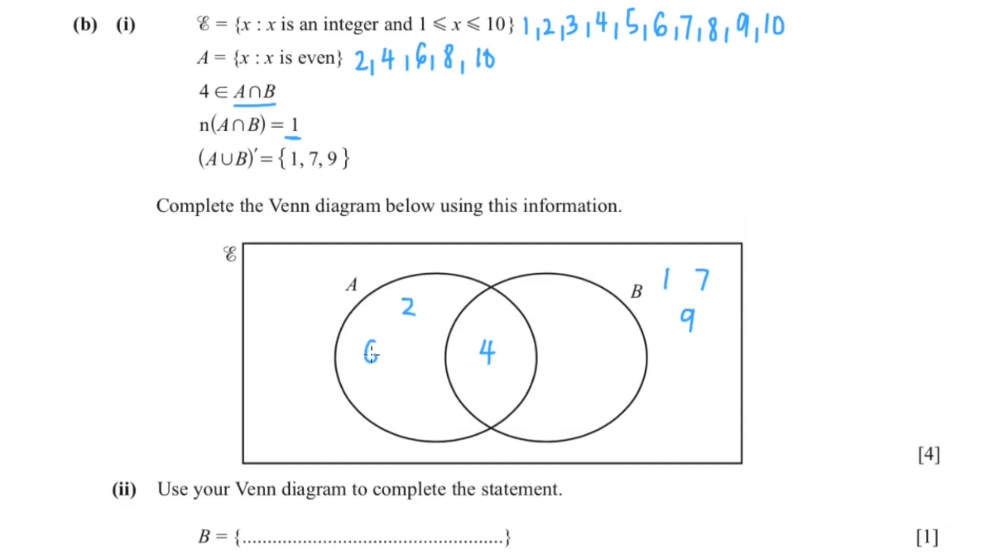So 2, 4 is already there, 6, 8, and 10. So 1 is already there. We have 2, 3, 4 is there, 5.